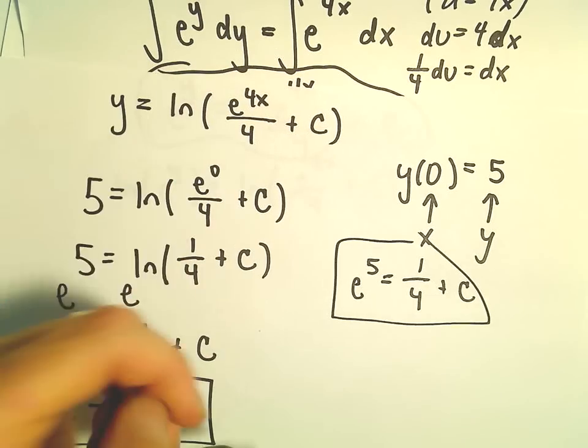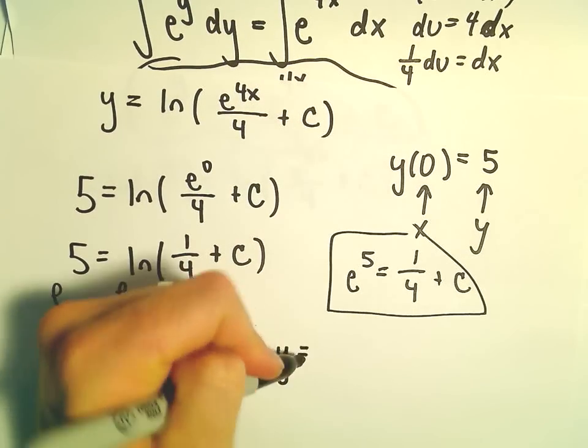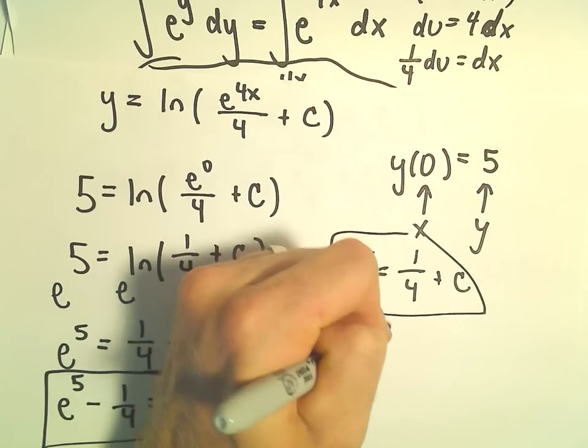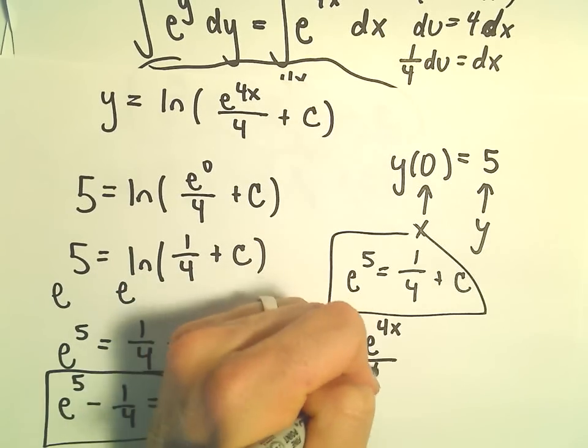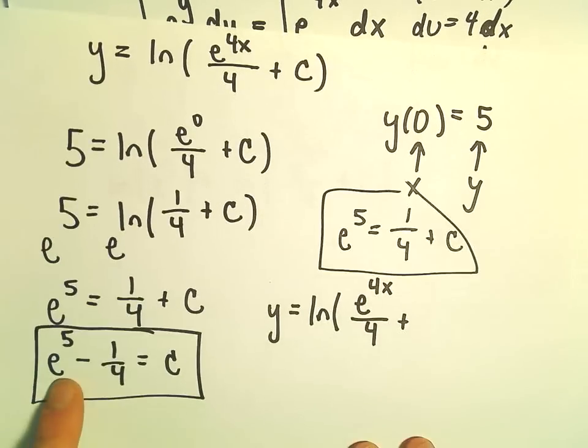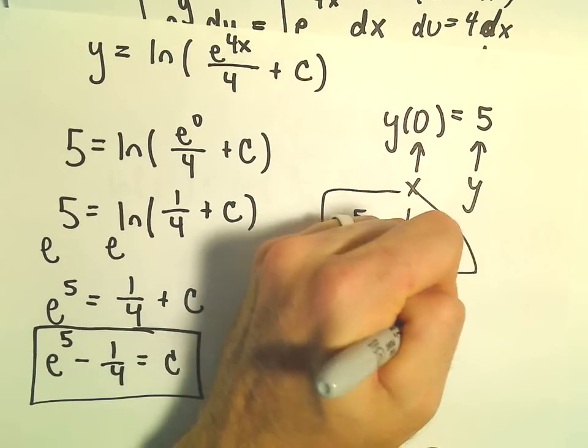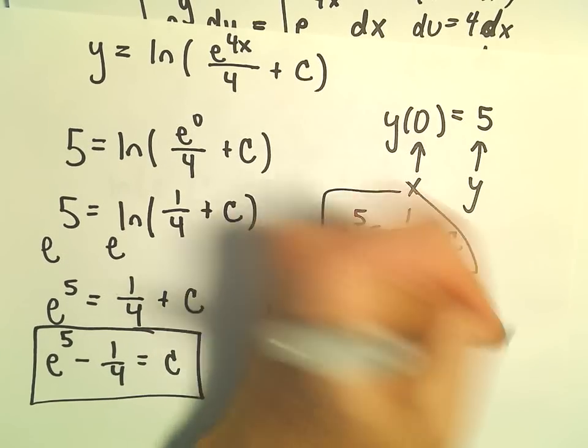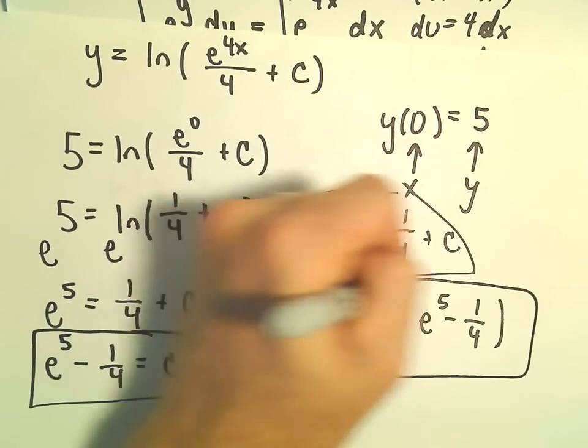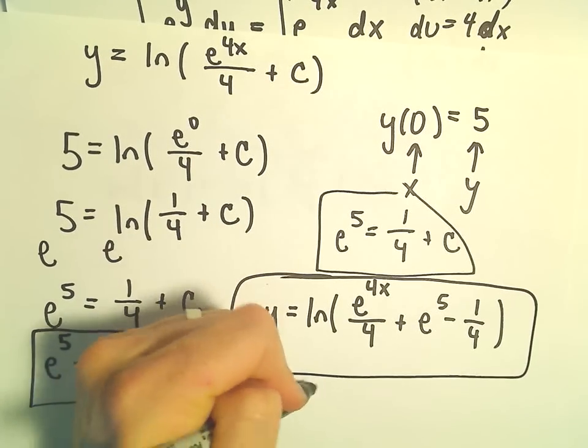Now all I'm going to do is plug it back in. Our particular solution will be y = ln(e^(4x)/4 + C), where C = e^5 - 1/4. And now we have our particular solution.